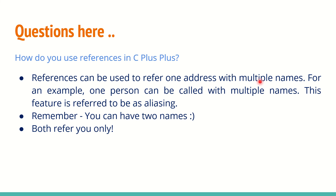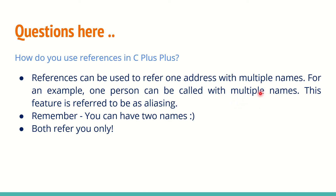How do you use references in embedded C++? References are used to refer to one address with multiple names. For example, address 1000 can be named 'Sachin' for one function, and another function can refer to the same location calling it 'Saurav' — same location, two different names. This is called aliasing, basically 'also known as.'